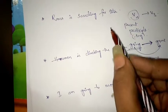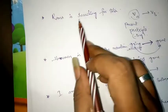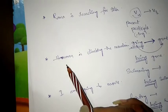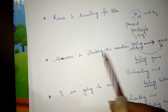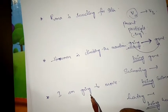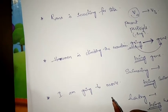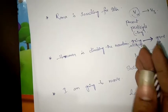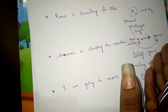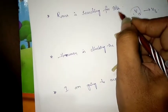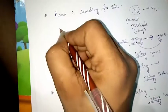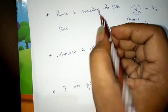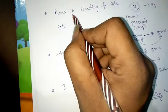I have written three types of sentences in present continuous. First one: 'Am I searching for Sita?' Second: 'Hanuman is climbing the mountain.' Third: 'I am going to the movie.' The rules are the same as for simple present, simple past, and simple future — the object will become the subject.